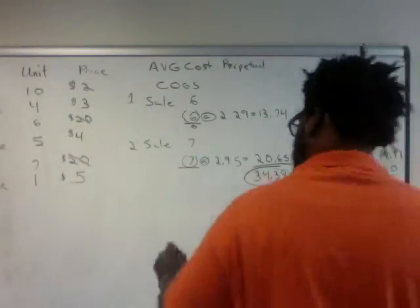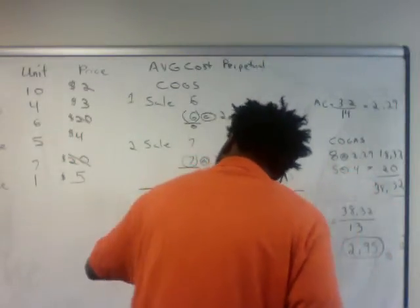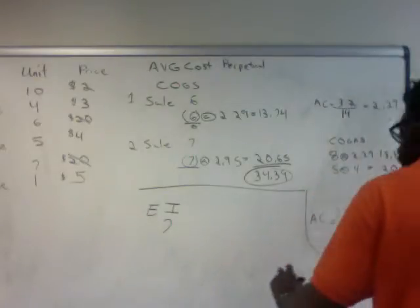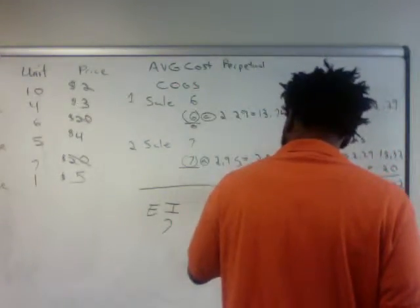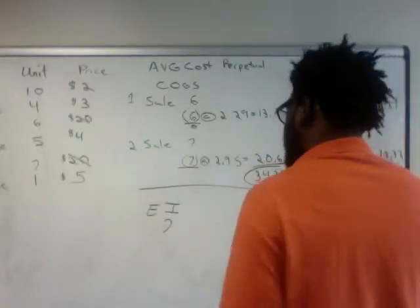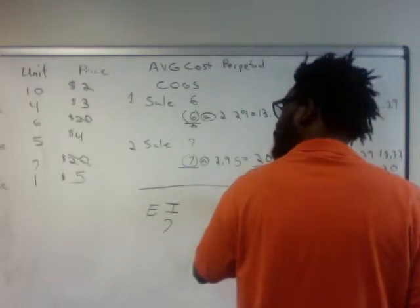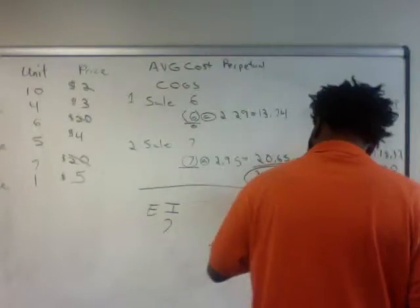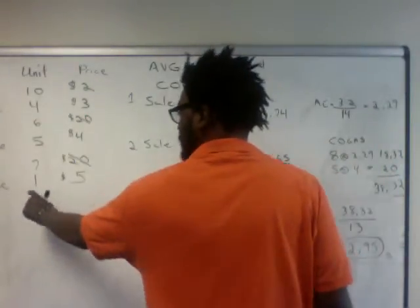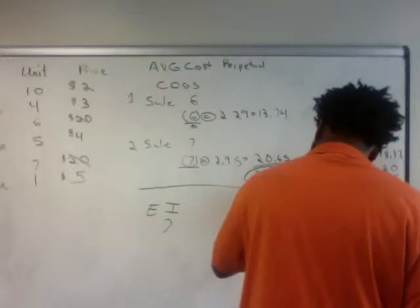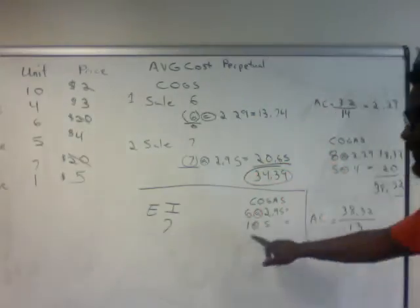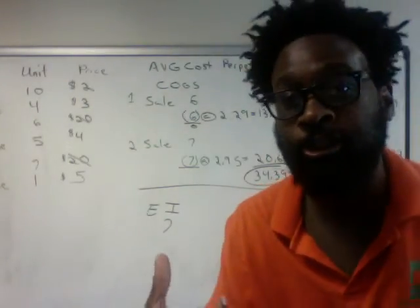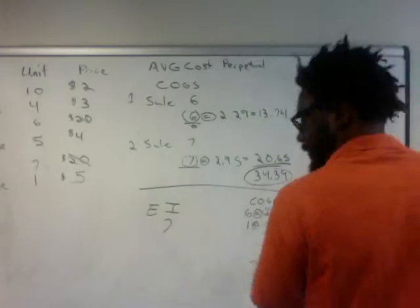So how are we going to do that? We know that our ending inventory has seven units. We have six units at an average cost remaining of $2.95, and we made that very last purchase of one unit at $5. The units available — seven units — is going to be our denominator, and our numerator is going to be the cost of those seven units. I'm going to pull out my calculator.